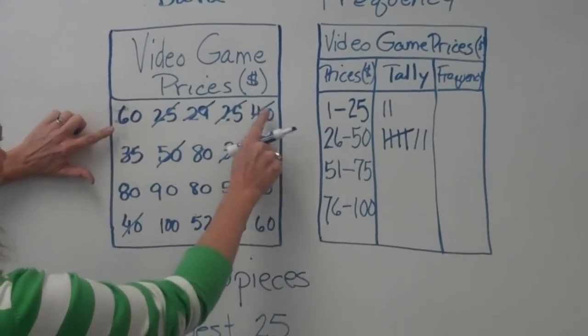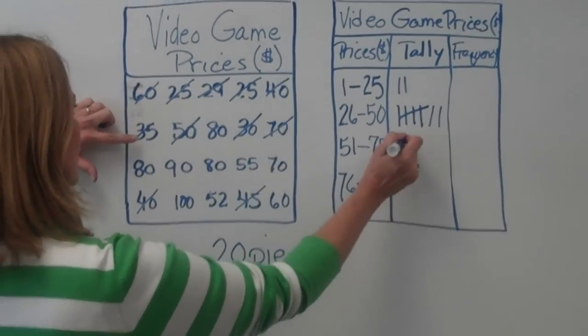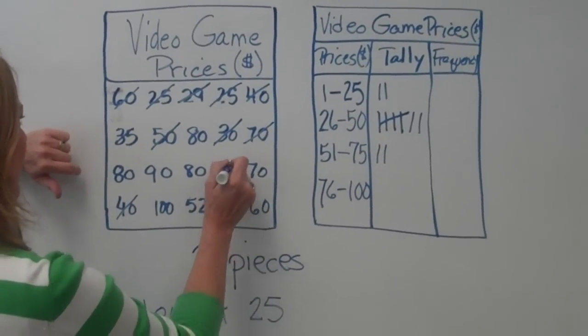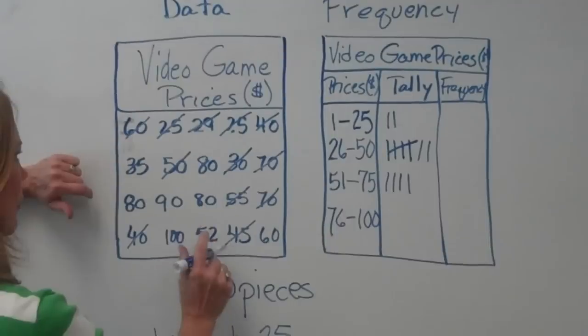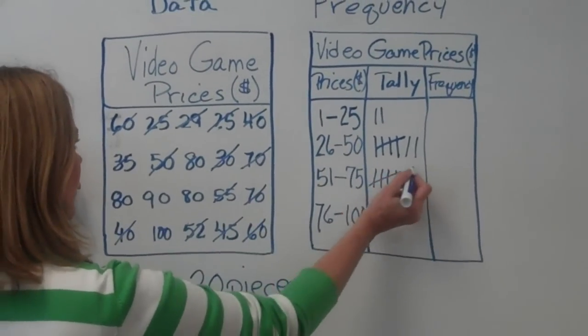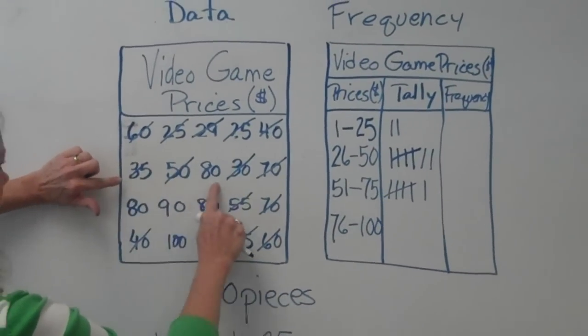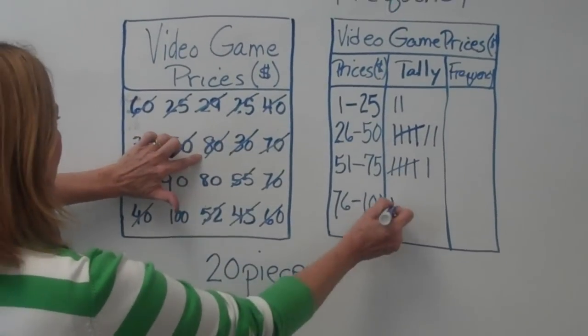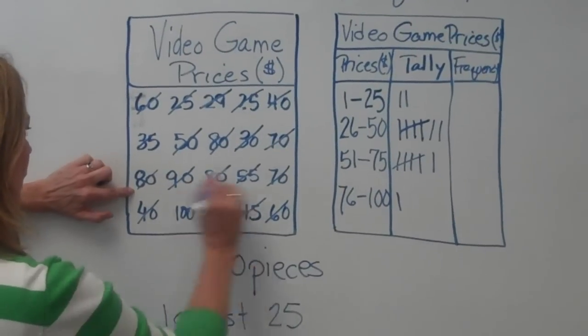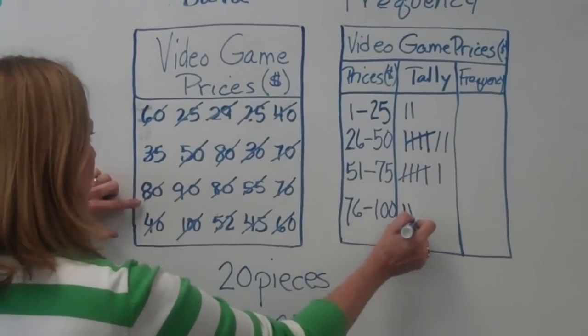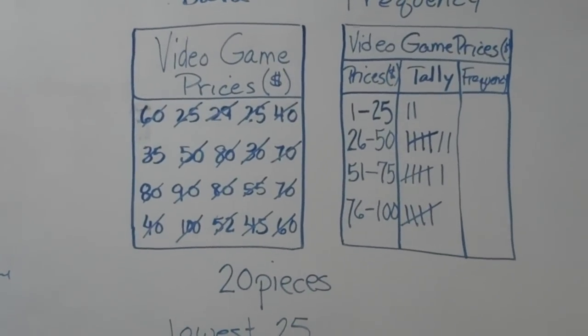51 to 75. 60 fits in that. 70 does. 55 and 70, that's two more. And 52 and 60. And our last interval, 76 to 100 dollars. 80 fits in there. Again, one, two, three, four. And we're done with our tally marks.